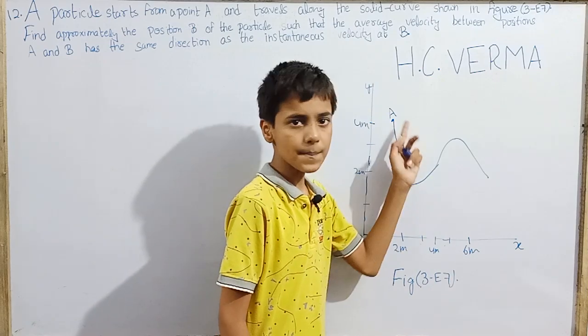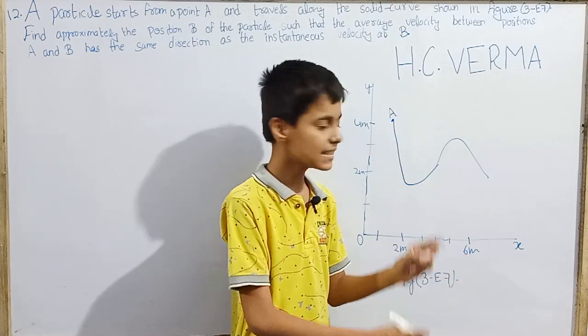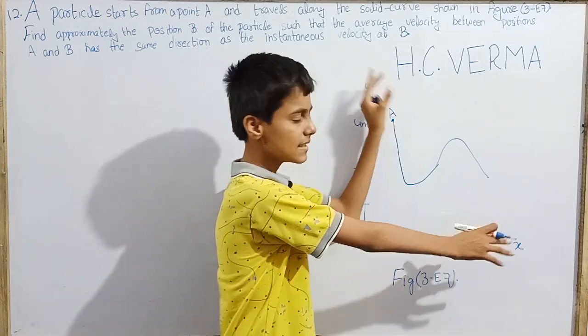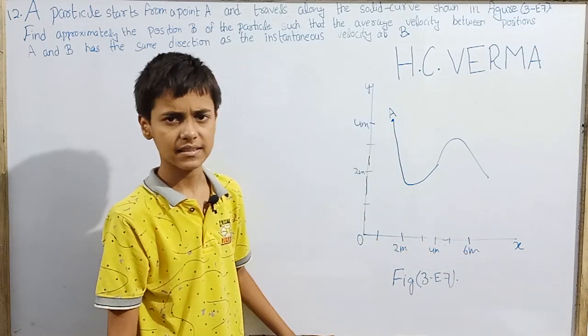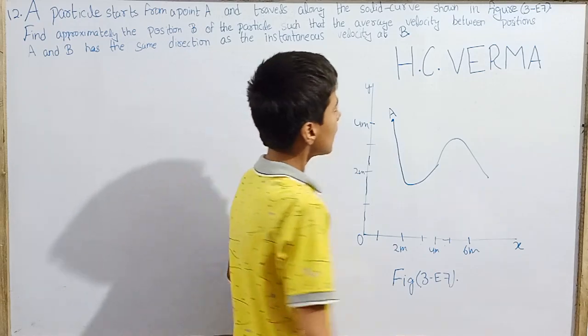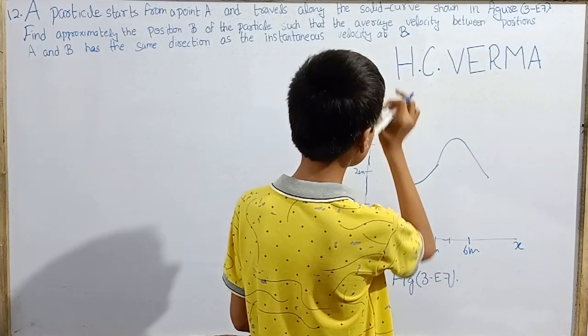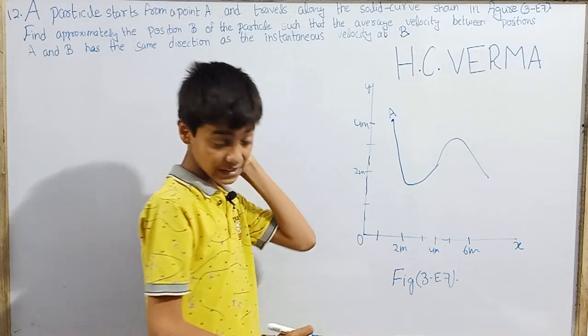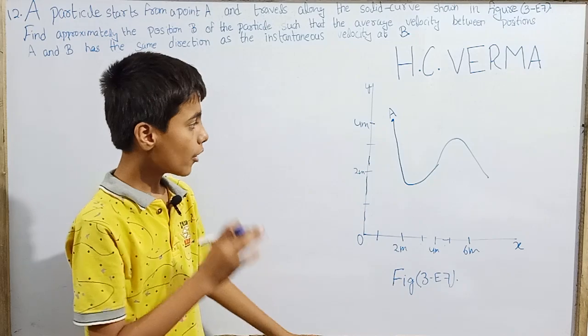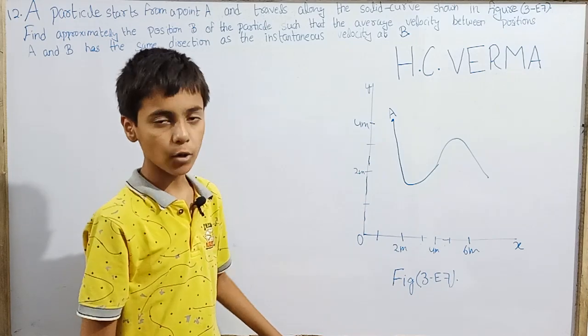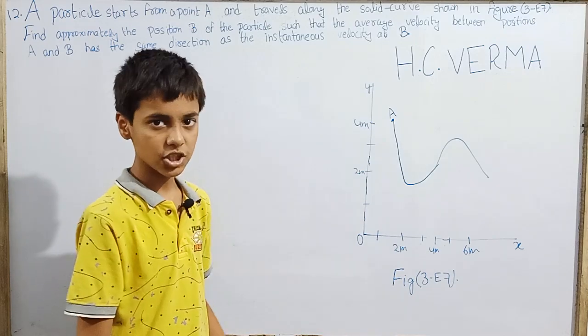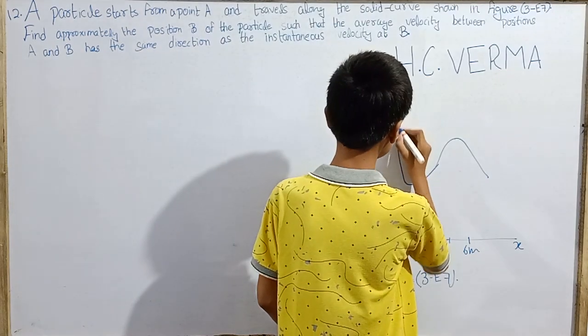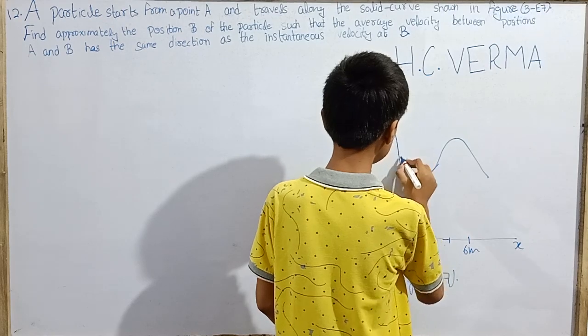So this particle is moving like this, and here we have made a coordinate system. We need to find point B where the average velocity between A and B and the instantaneous velocity at point B have the same direction. This is a question we really have to guess.